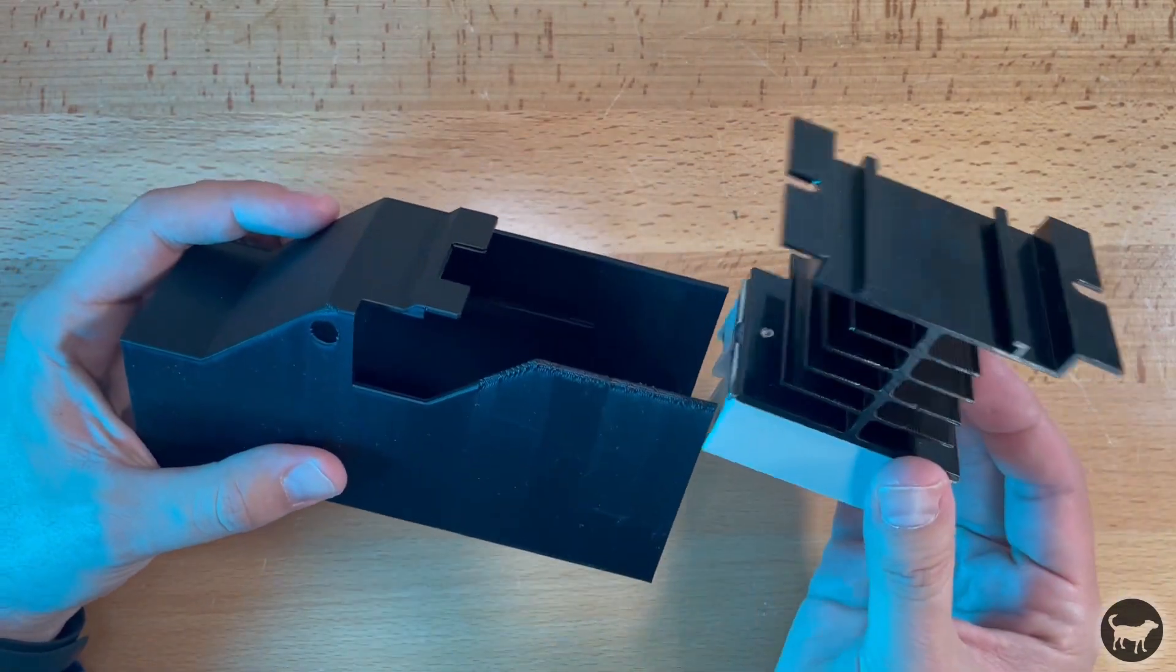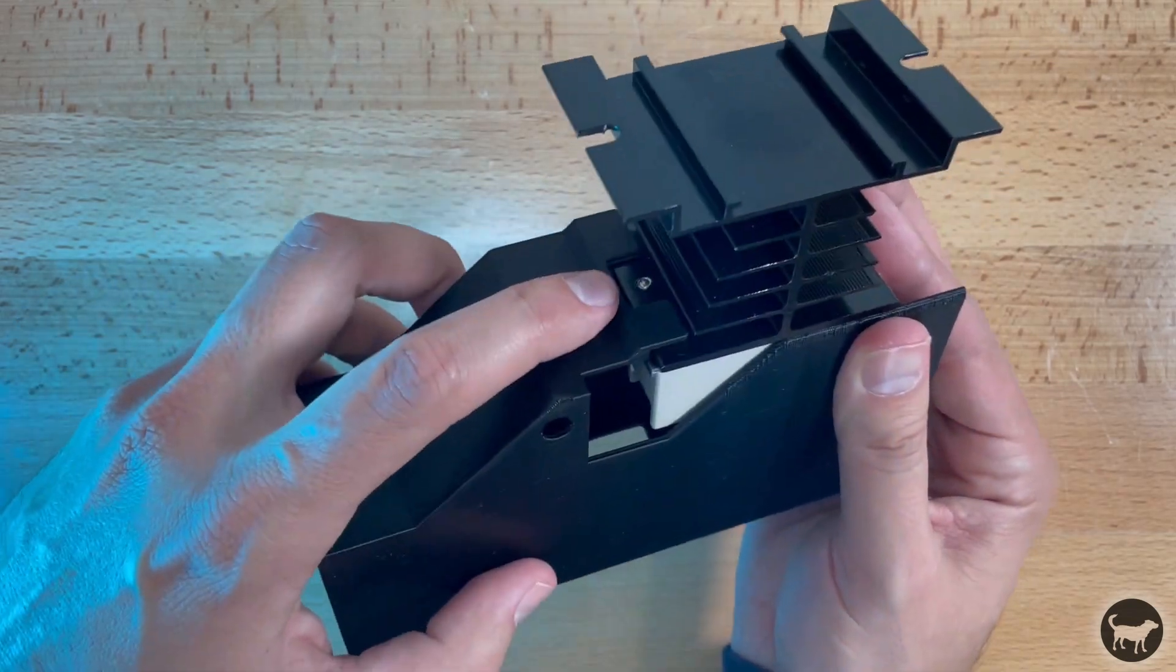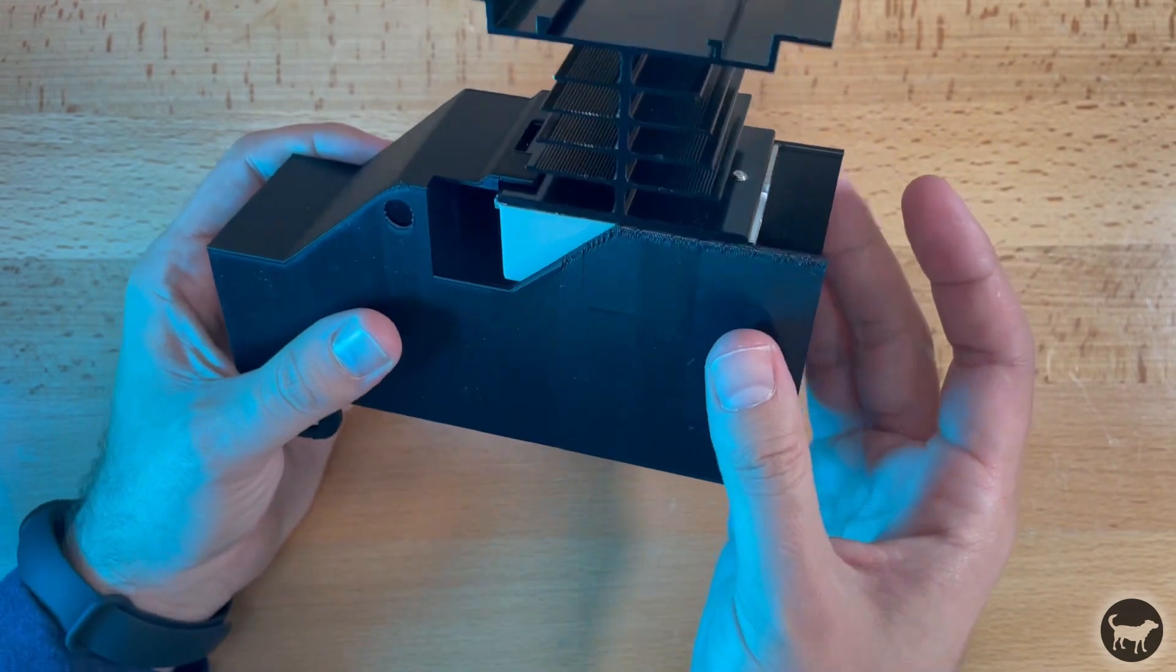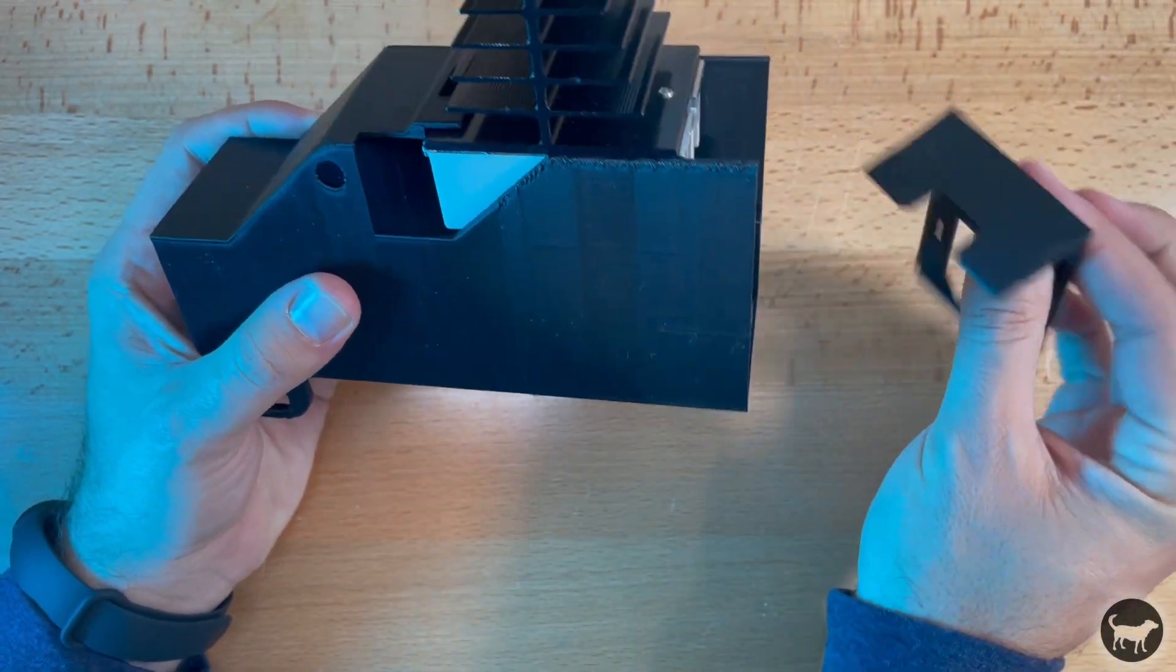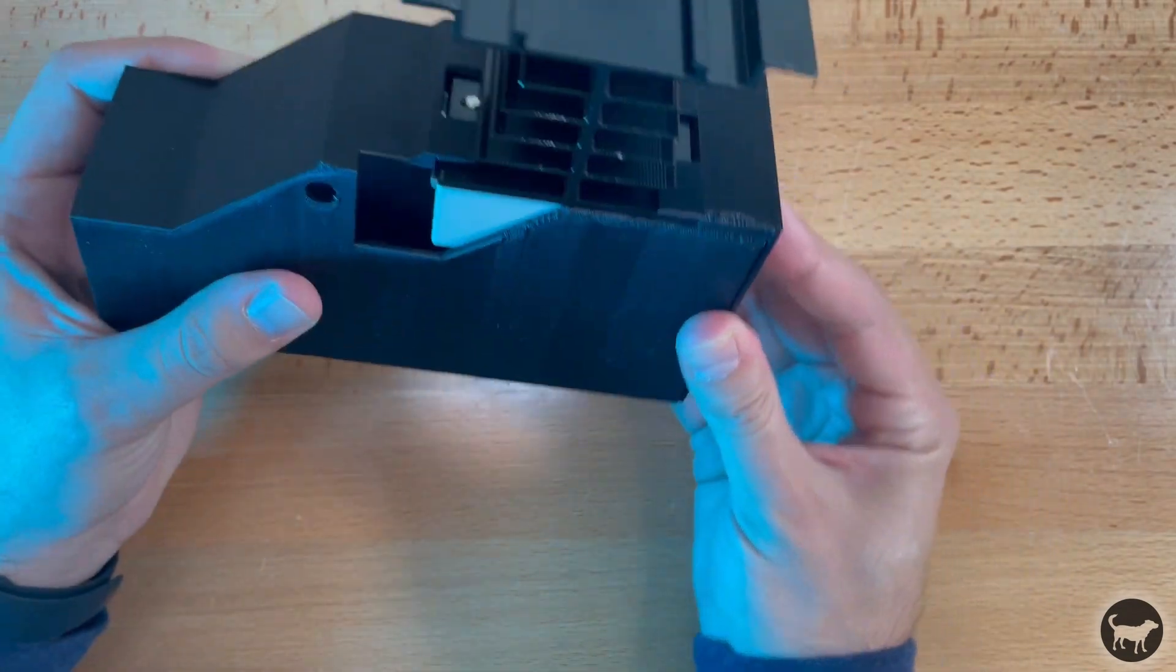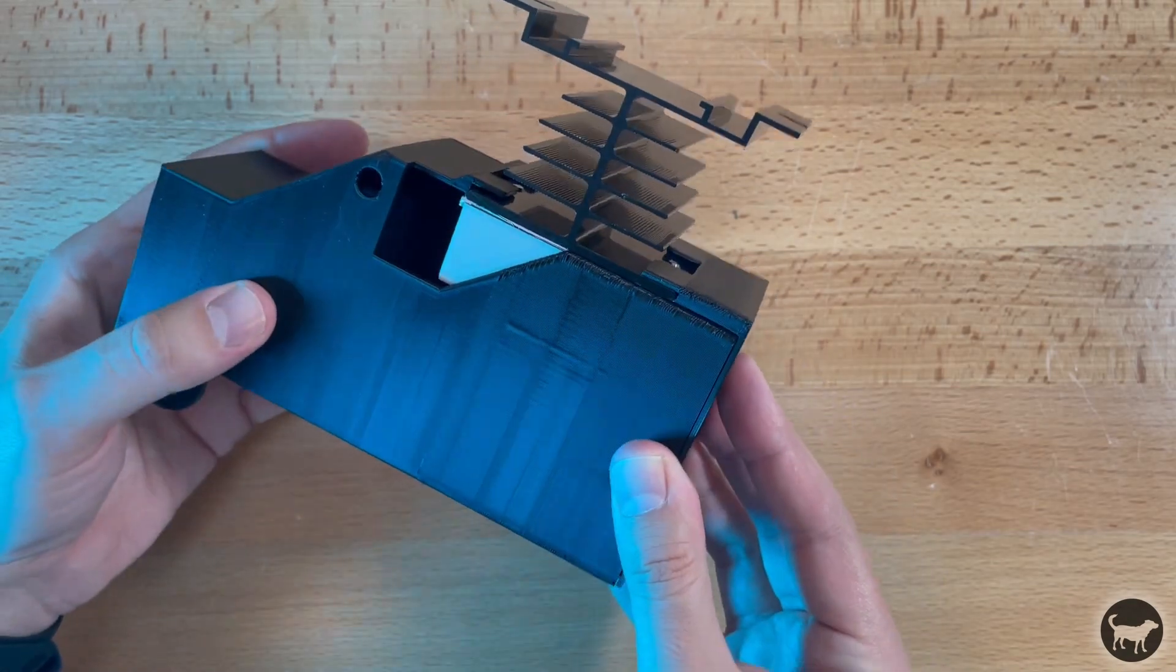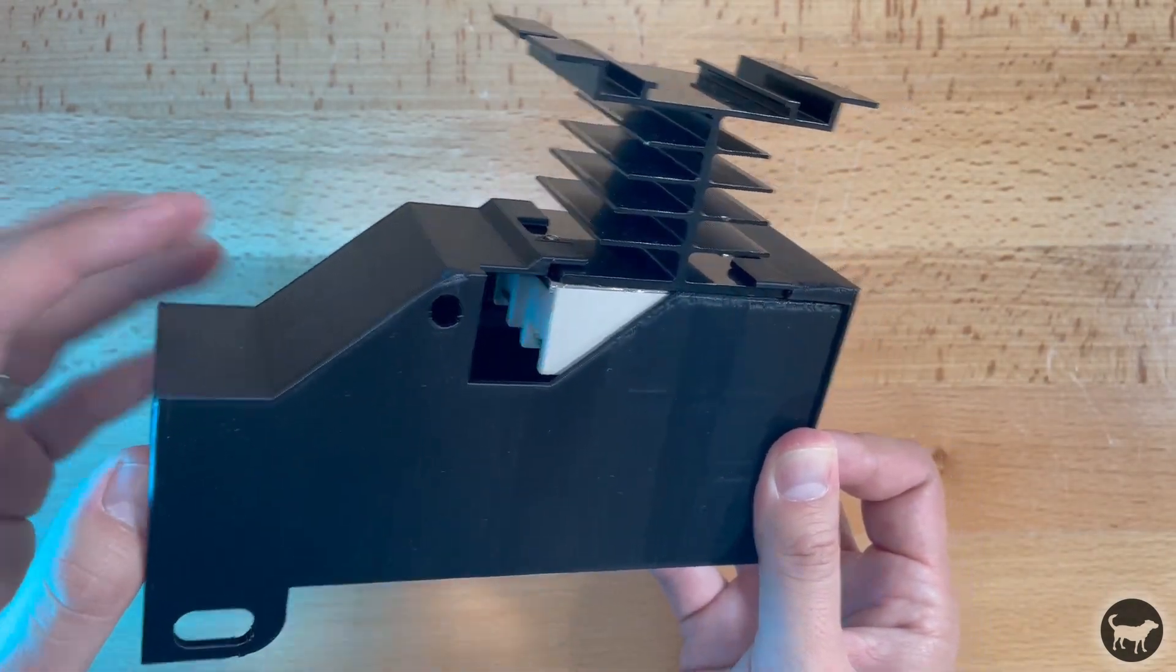Okay, so then once that is attached, what you're going to do is when you're putting it together, it's going to slide in the same way that the old one was, but it's going to tuck under these new tabs right here. And then when you put on the back, the back also has those tabs on it and it's just going to fit right over and keep that in place so that it can't fall out. And I'll put a link to this new case in the description.